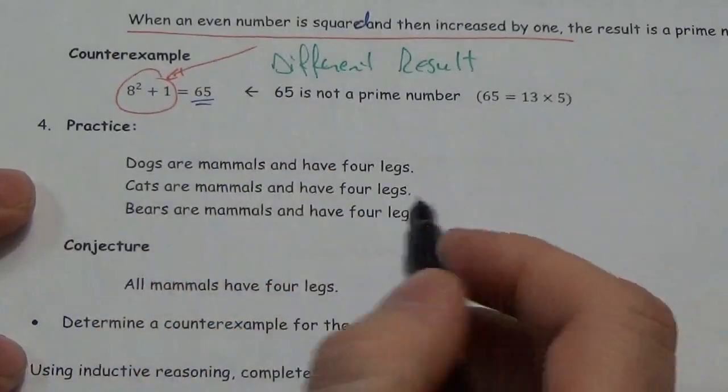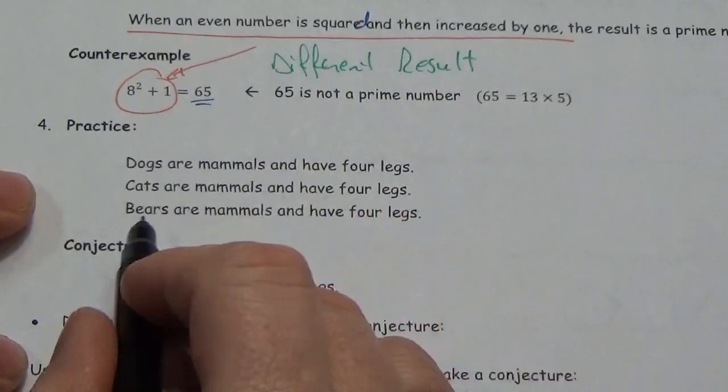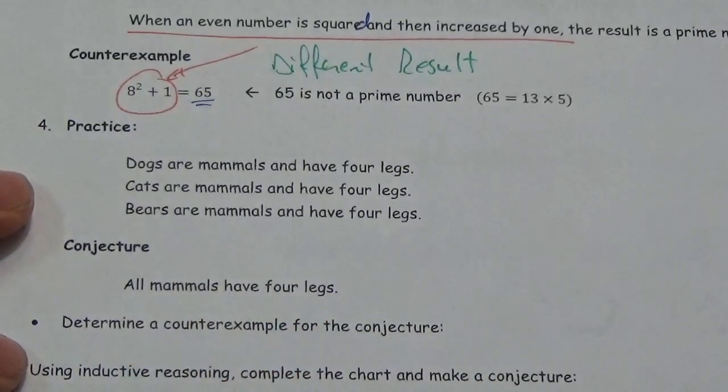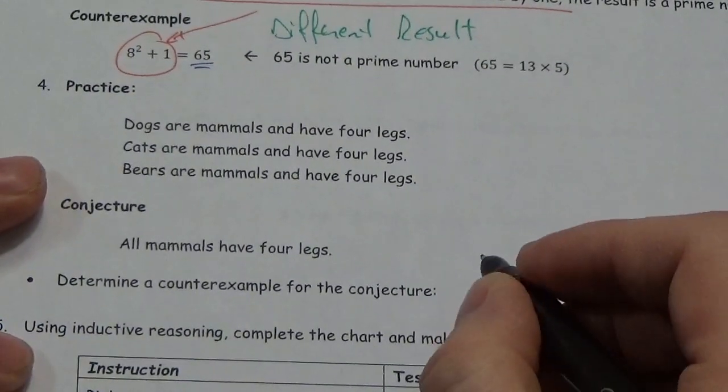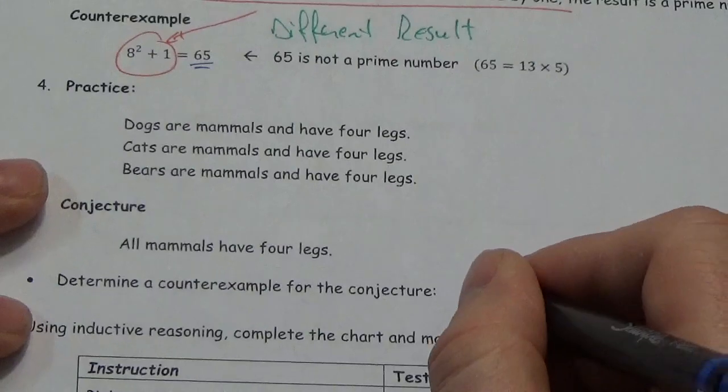Dogs are mammals and have four legs. Cats are mammals and have four legs. Bears are mammals and have four legs. All mammals have four legs. There's my conjecture here. Well, can we come up with a counterexample of that? Well, yeah, humans. Humans have two legs.